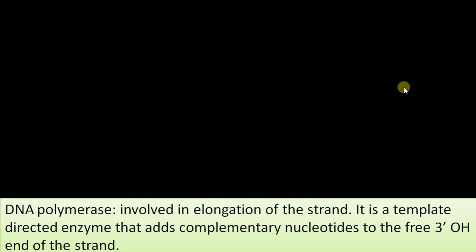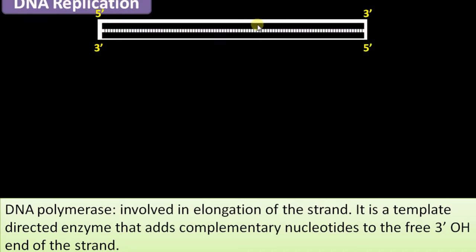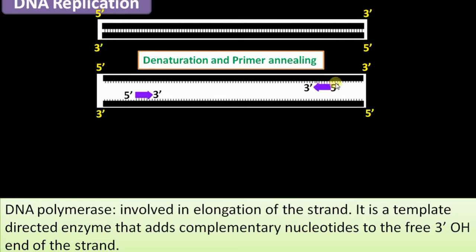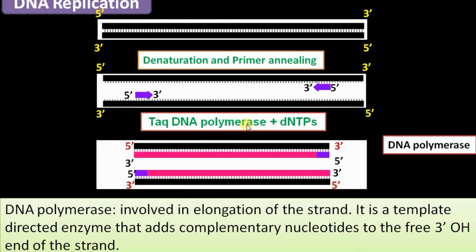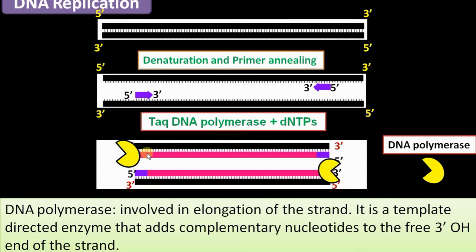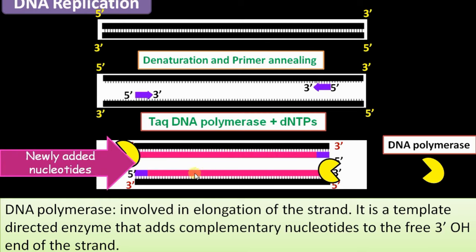The next class is DNA modifiers. DNA polymerase is an enzyme involved in elongation of a strand — it adds complementary nucleotides to the free 3' OH end of a primer. In PCR, a primer anneals and the elongation is carried out by polymerases like Taq DNA polymerase with dNTPs supplied. The DNA polymerase binds to the free 3' OH end of the primer and elongates the strand, adding nucleotides complementary to the template strand.